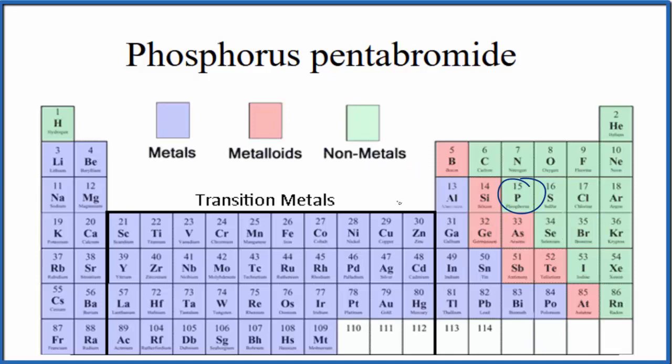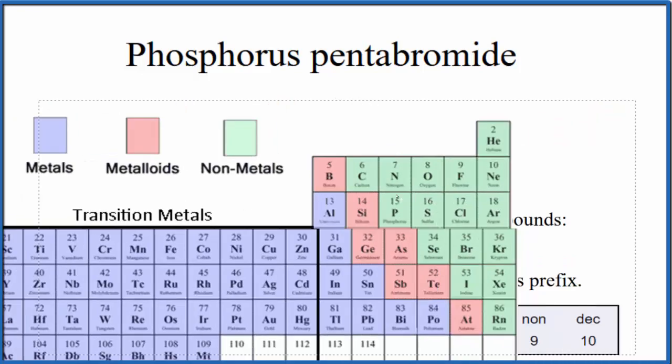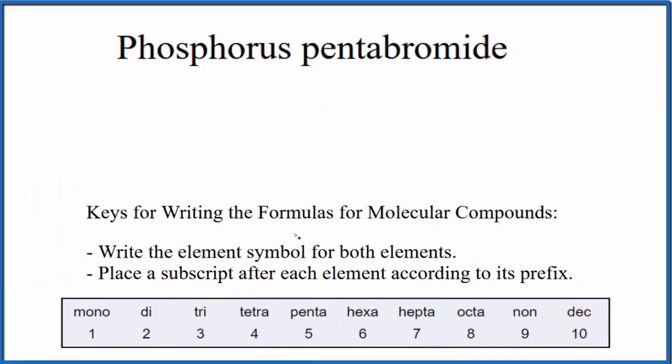That means that this is going to be a molecular compound, also called a covalent compound. So to write the formula for phosphorus pentabromide, we can use these rules here. First, we write the element symbol for both elements.